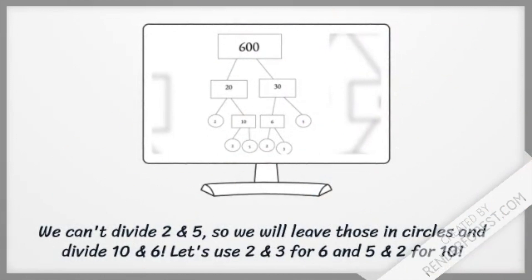We can't divide 2 and 5, so we will leave those in circles and divide 10 and 6. Let's use 2 and 3 for 6 and 5 and 2 for 10.